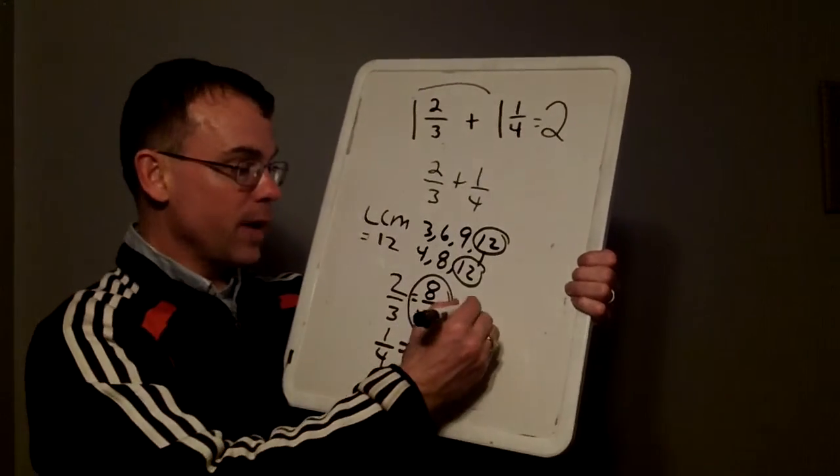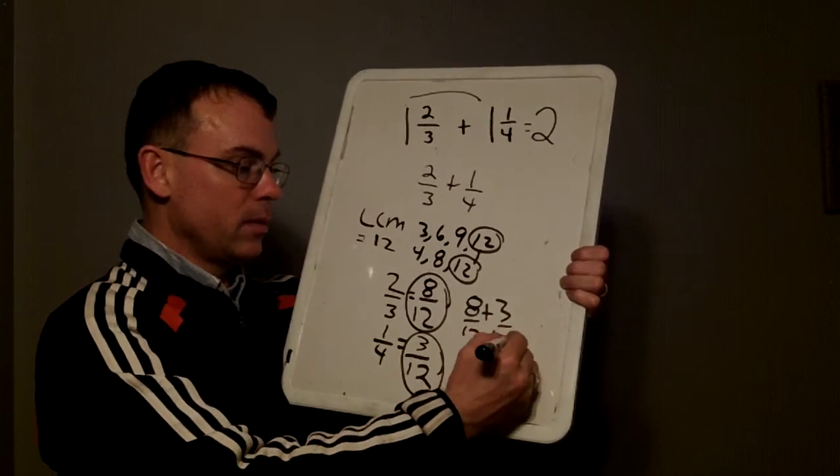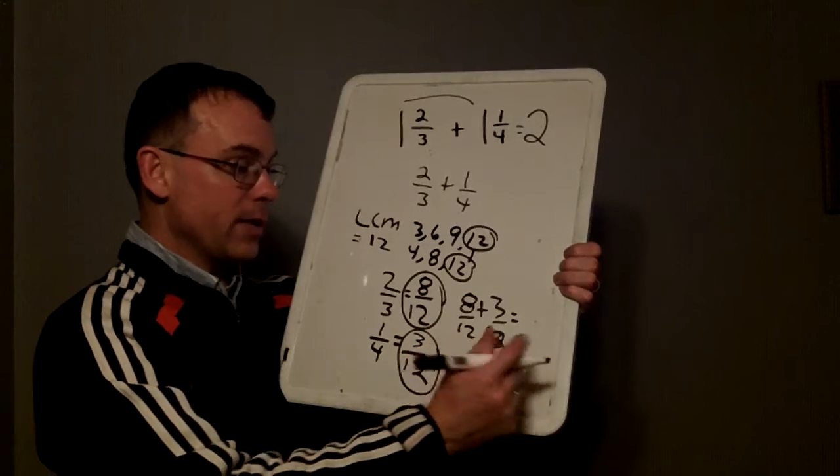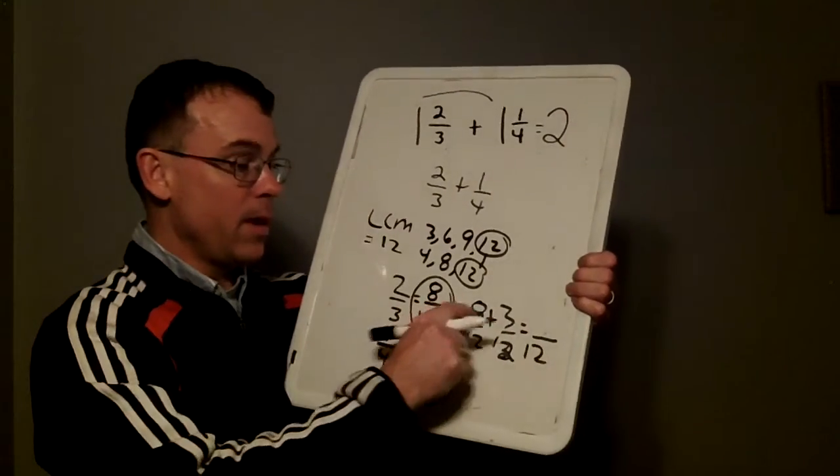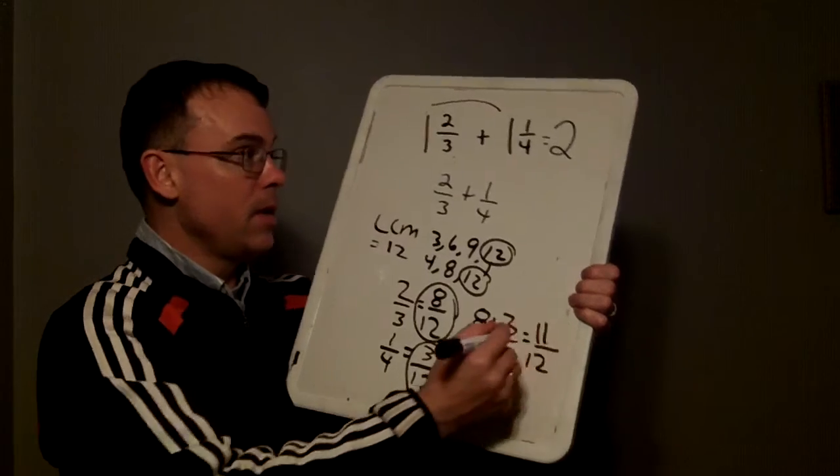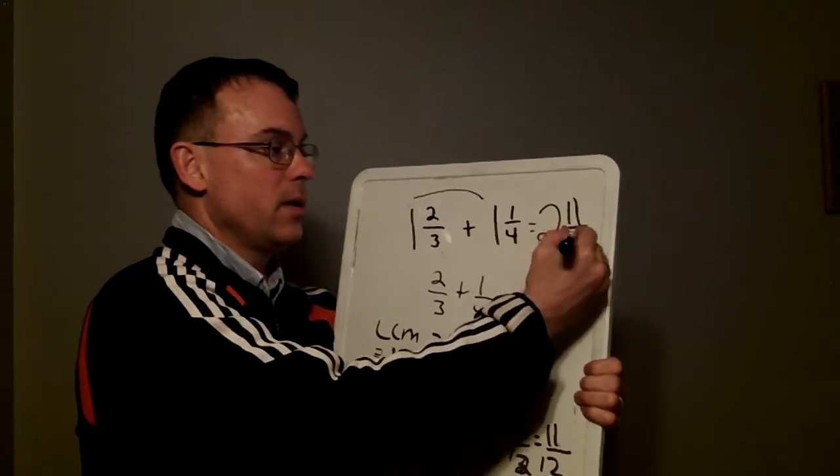My two new fractions are eight twelfths and three twelfths. Because I'm adding twelfths, twelve remains as my denominator. Eight plus three gives me eleven. Adding it to the whole number at the top would give me two and eleven twelfths.